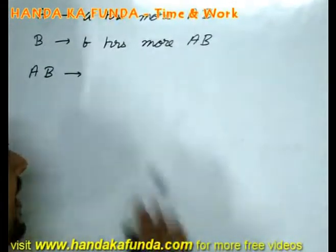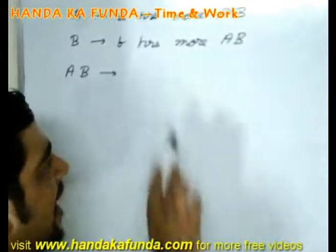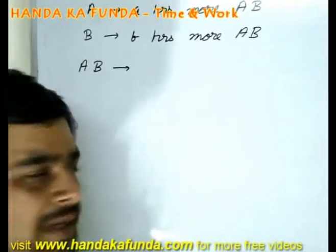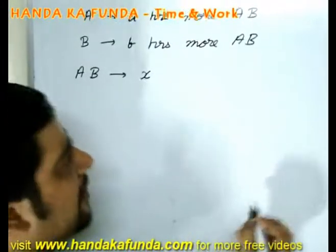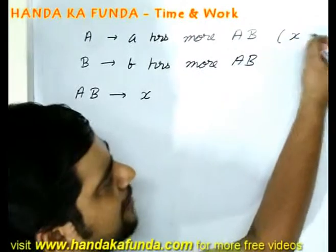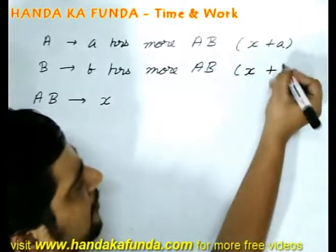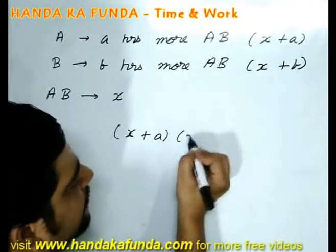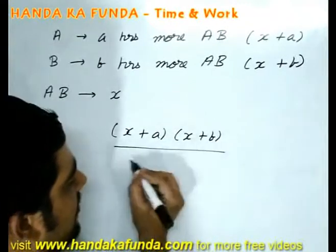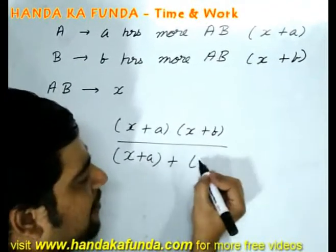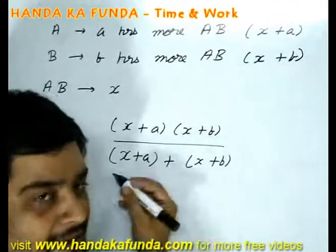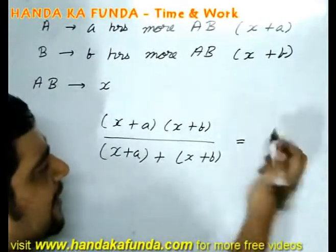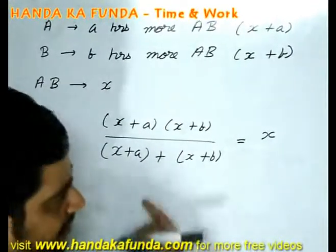Let us take a case where A takes A hours more than A and B combined, and B takes B hours more than A and B combined. Then A and B combined will take — suppose we call that X. That means effectively, A takes X plus A hours and B takes X plus B hours. To combine two time values, we take their product divided by their sum: AB/(A+B). A and B combined is assumed to be X, so we solve for X.